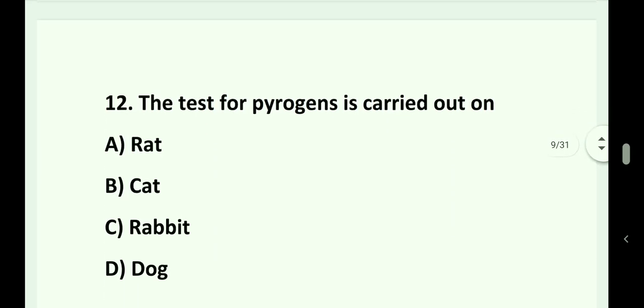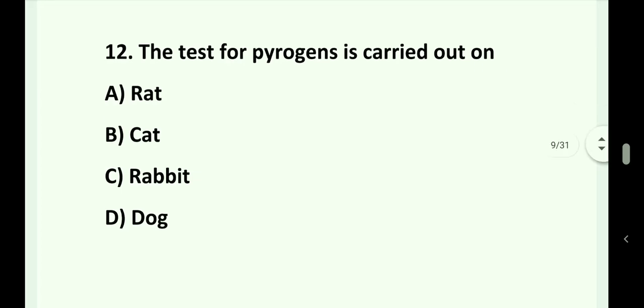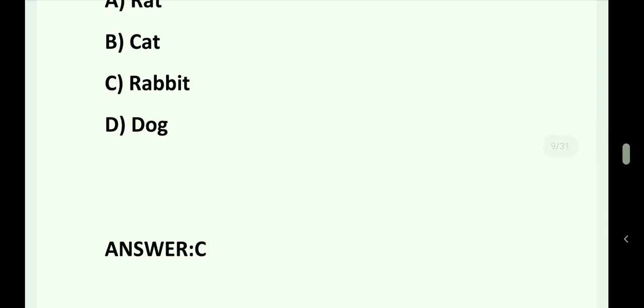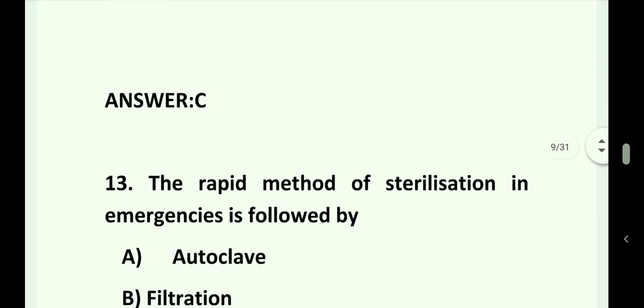Question number 12. The test for pyrogens is carried out on: Option A. Rat. Option B. Cat. Option C. Rabbit. Option D. Dog. Answer is Option C. Rabbit.